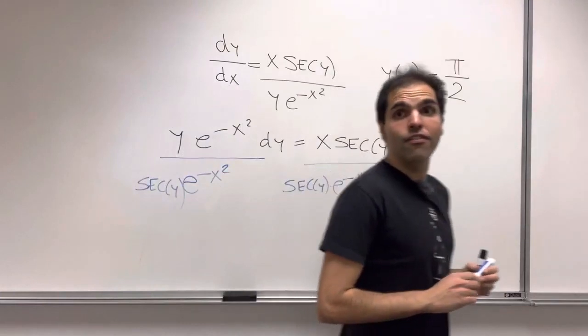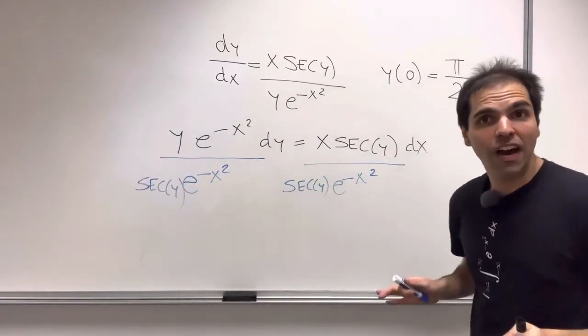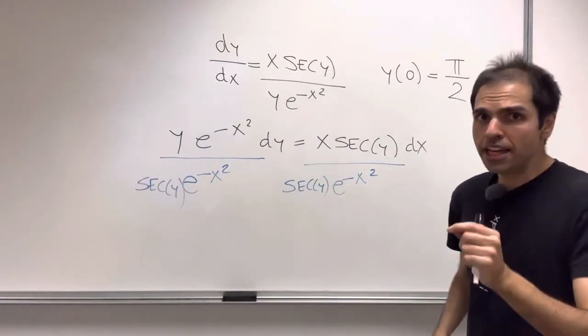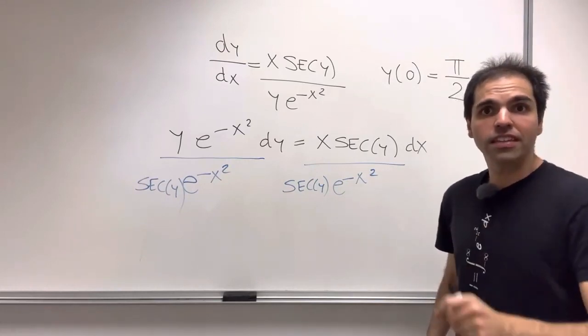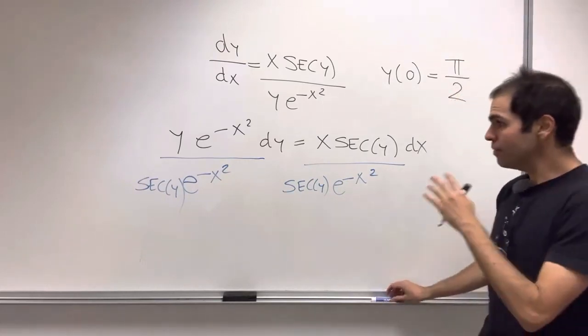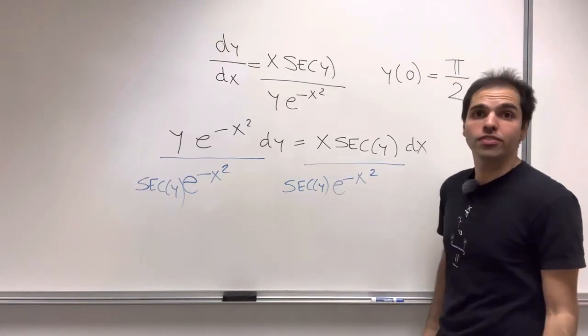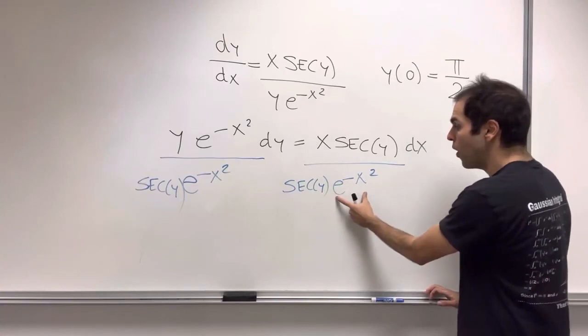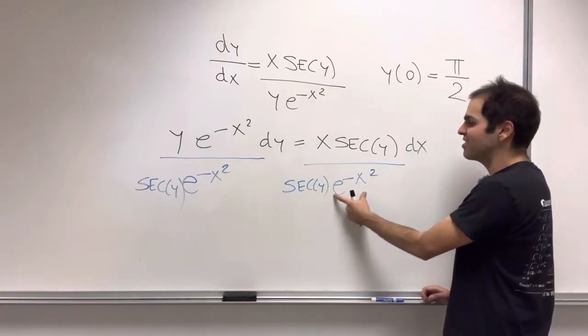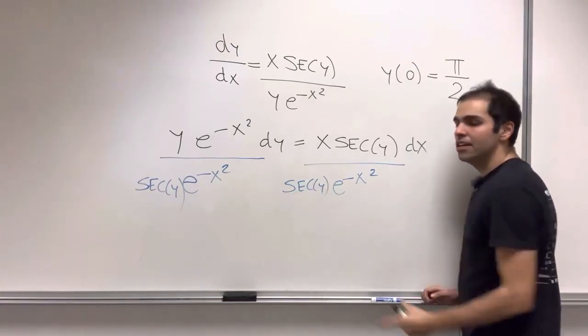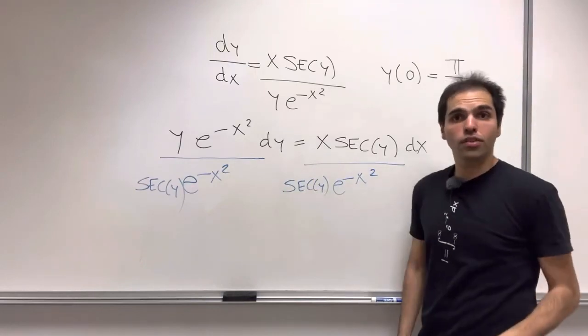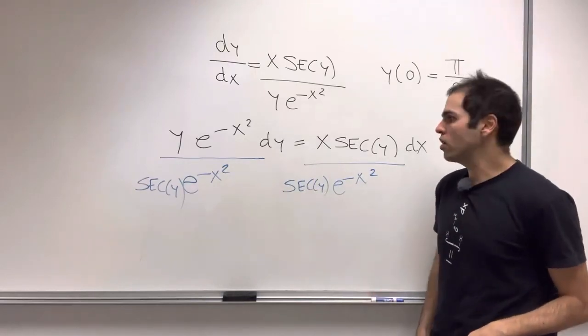And very important, whenever you're dividing by something, make sure that something is not zero. Because sometimes you might miss constant solutions from this procedure. But here, there's no problem because e to the minus x squared is always positive. And secant is also never zero because it's one over cosine.